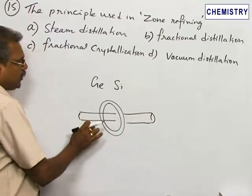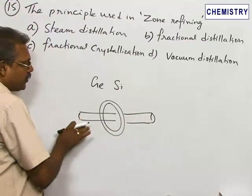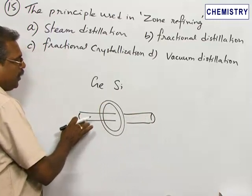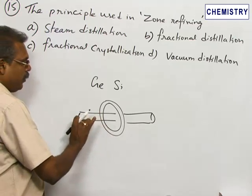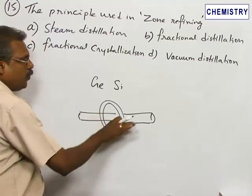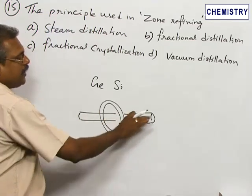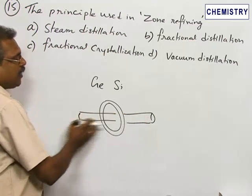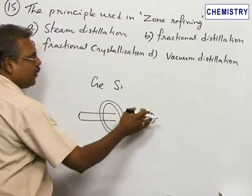By the time pure metal dissolves and crystallizes, the coil is moved further. So this process is repeated. After so many repetitions, what happens is the pure metal comes to one side and the impurities go along with the melt. So after many repetitions, the impure rod is just discarded.